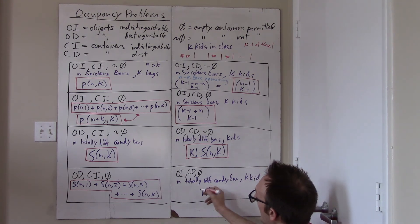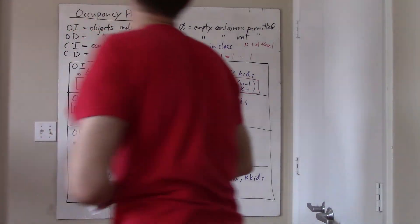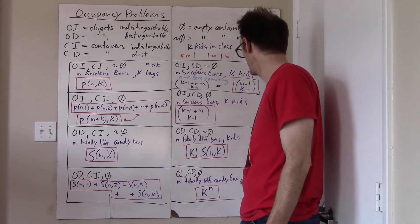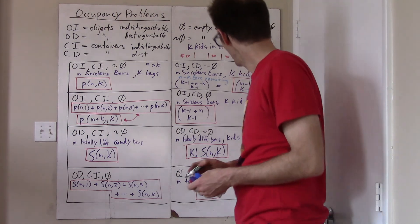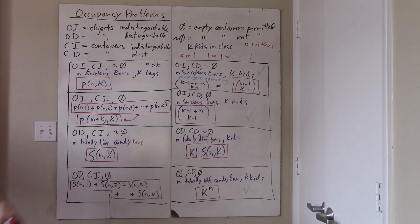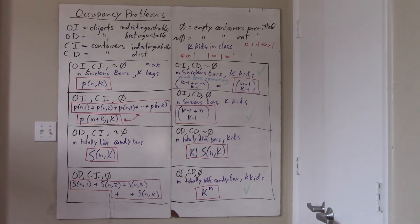A couple of these we already knew how to do before today — really just this one, this one, and this one. But now with the expansion of our vocabulary to partition numbers and Stirling numbers of the second kind, combined with other counting principles, we now have a solution to all eight possibilities regarding the containers, the objects, and whether the containers are permitted to be empty. These are called occupancy problems, and there's going to be some homework on this.